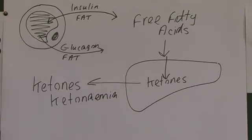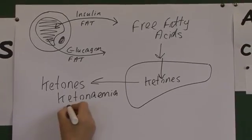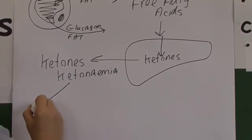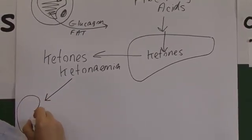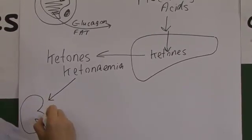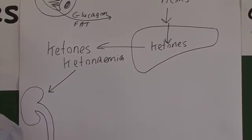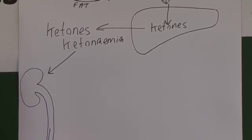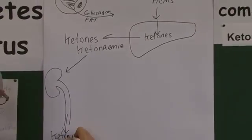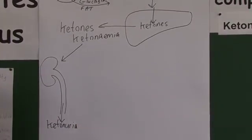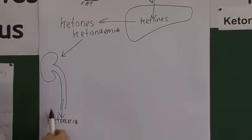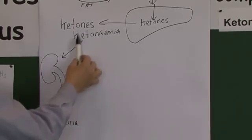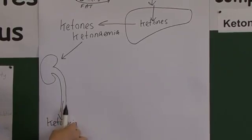And this has got several implications. One is quite useful for us, because the high levels of ketones in the blood, some of them are excreted by the kidneys. And this means that we can see the ketones in the urine. There's a ketonuria, and we can test for this with our dipsticks.